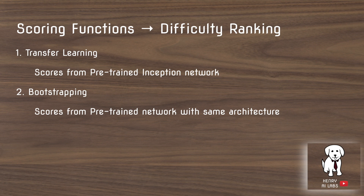The other idea is bootstrapping, where you take scores from a pre-trained network with the same architecture as the network you want to train with curriculum learning. The key difference is that instead of using a pre-trained network that doesn't share the same parameters, you use the exact same network architecture to form the scores.